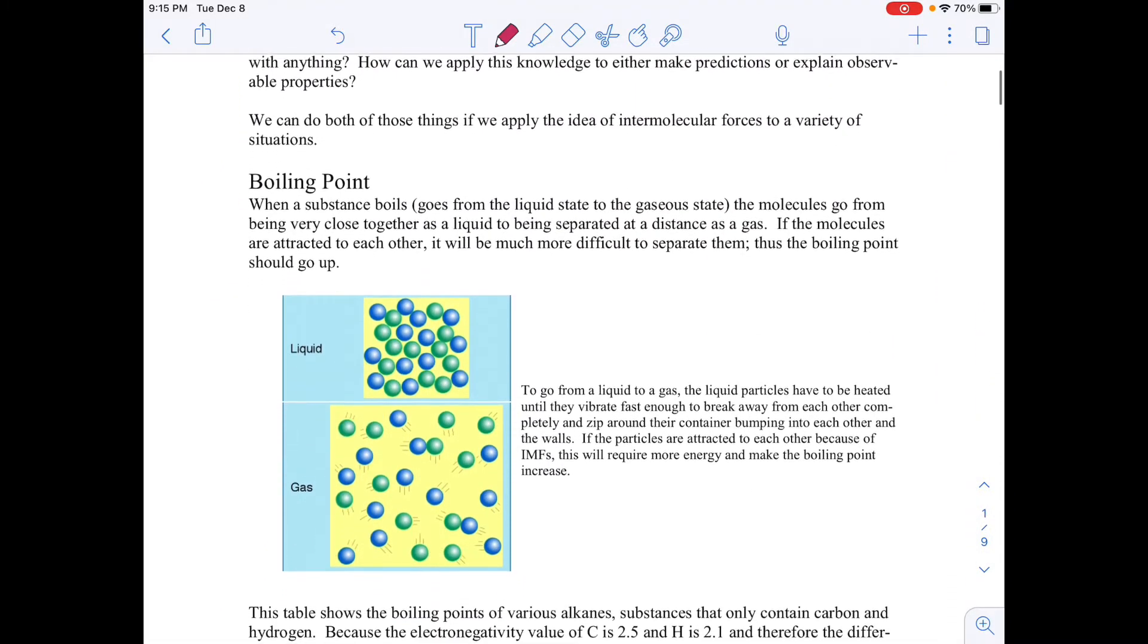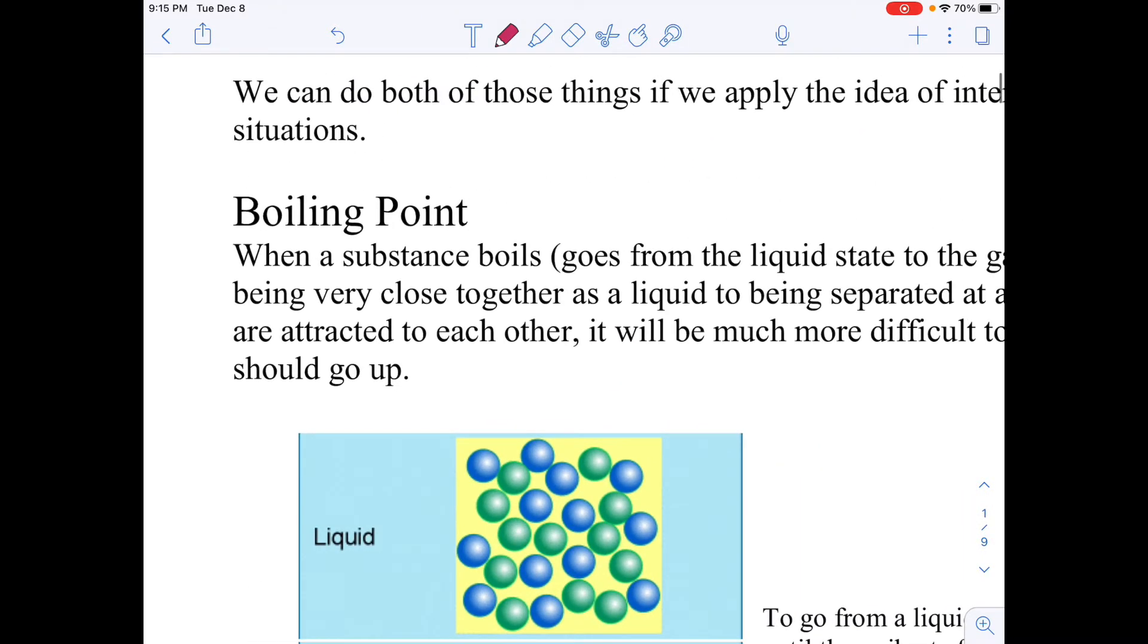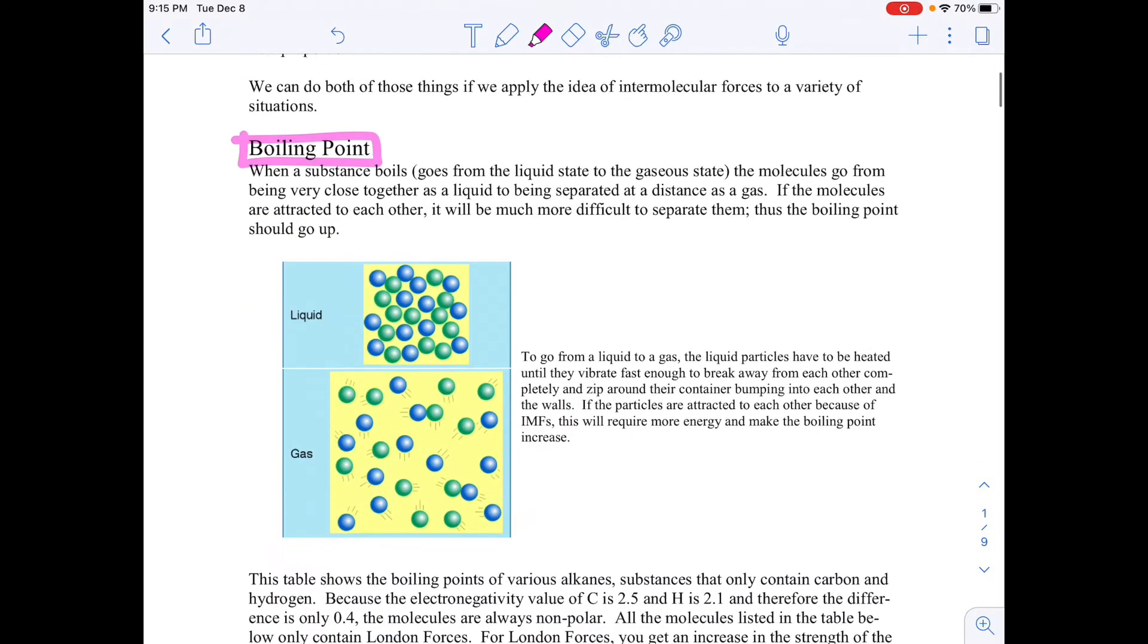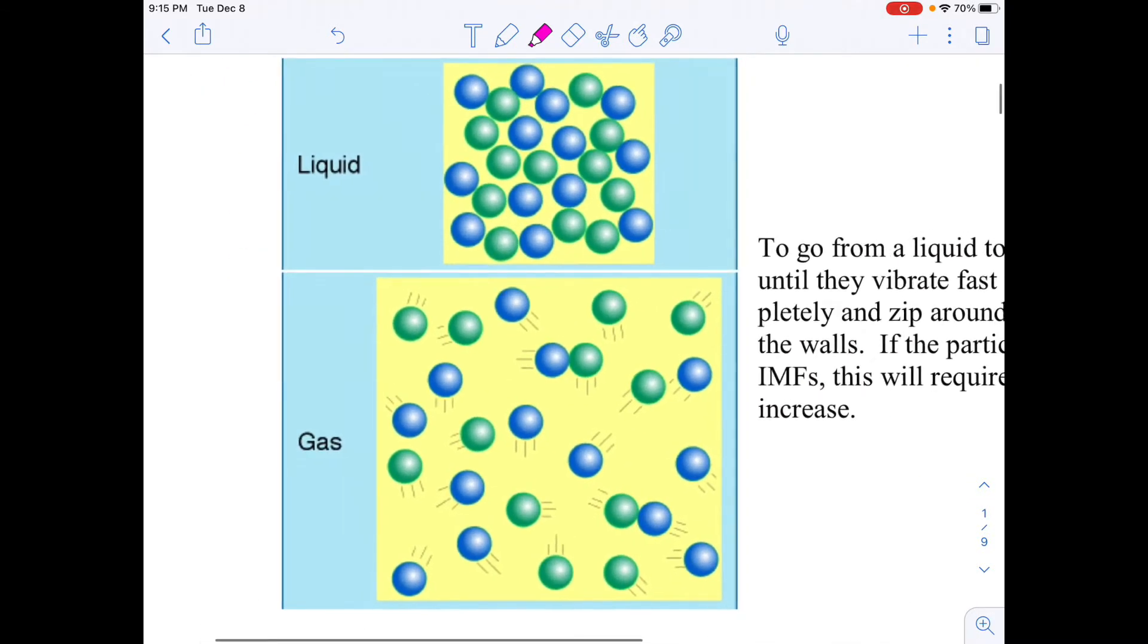So ways that IMFs can affect substances. Boiling point is one of them. Boiling point is going from a liquid to a gas with the addition of heat. I like this picture because what it's showing is you have all of these molecules or atoms touching, and then they break apart when they boil. If we're talking about IMFs and we're seeing them as magnets, if they're very strong magnets, it's going to be very difficult to pull them apart.